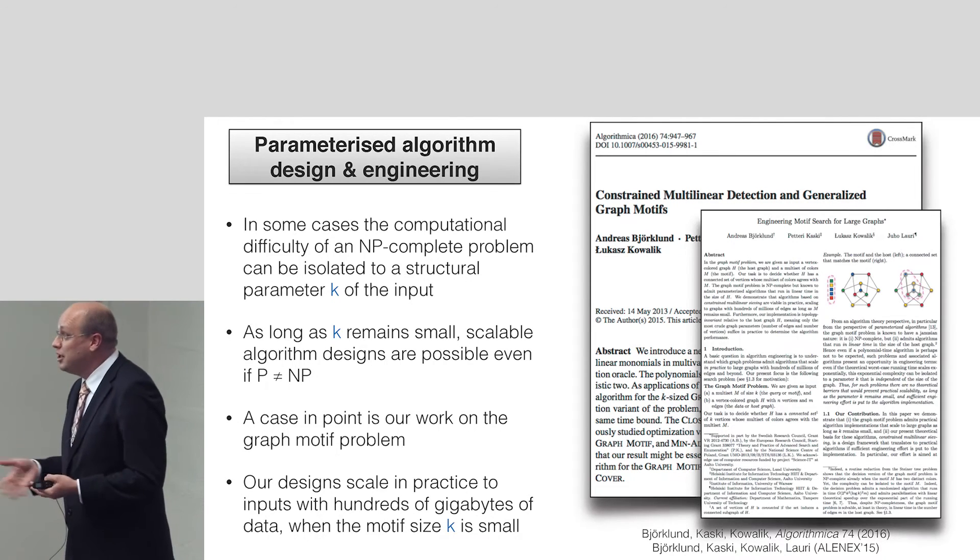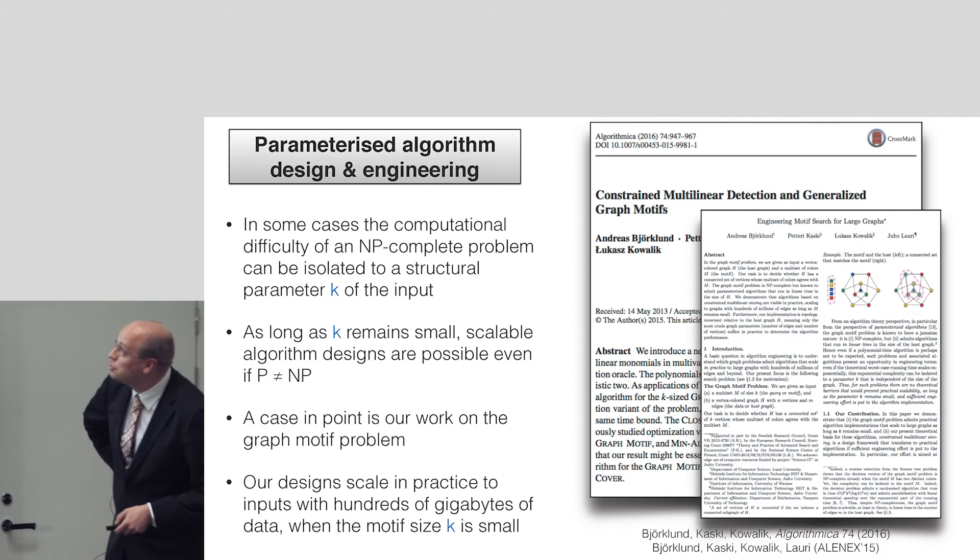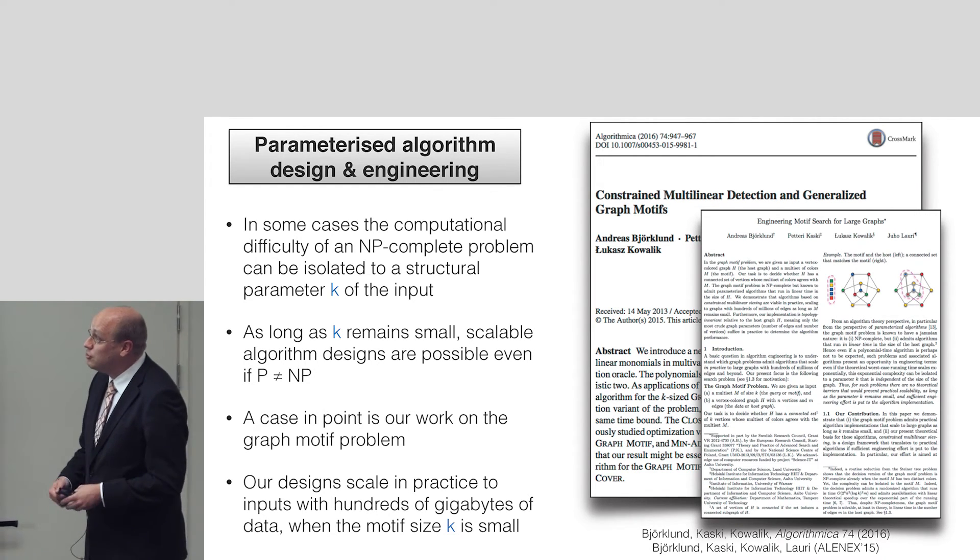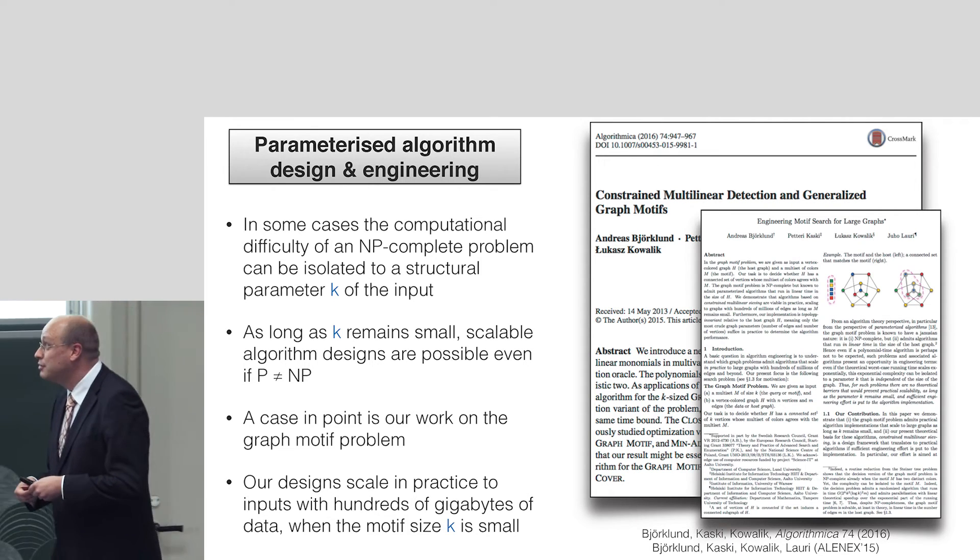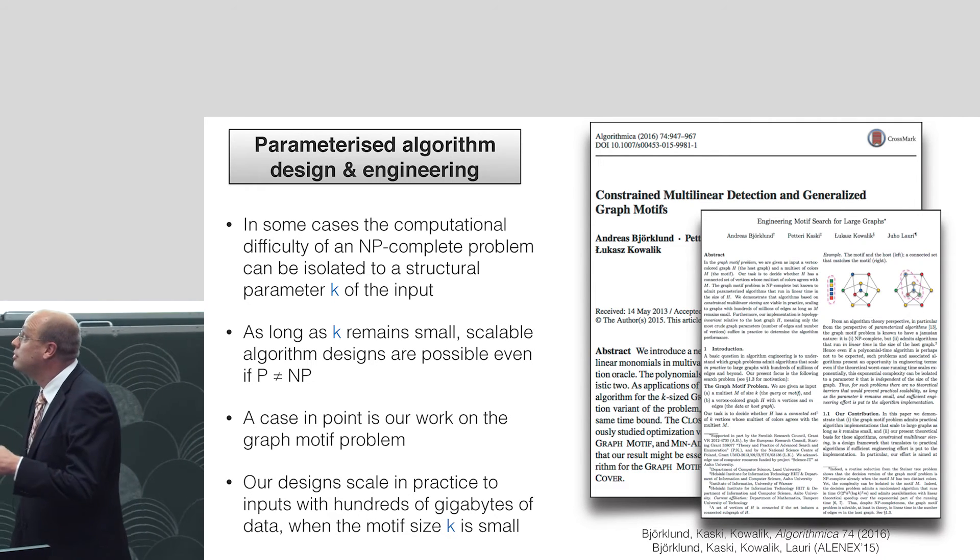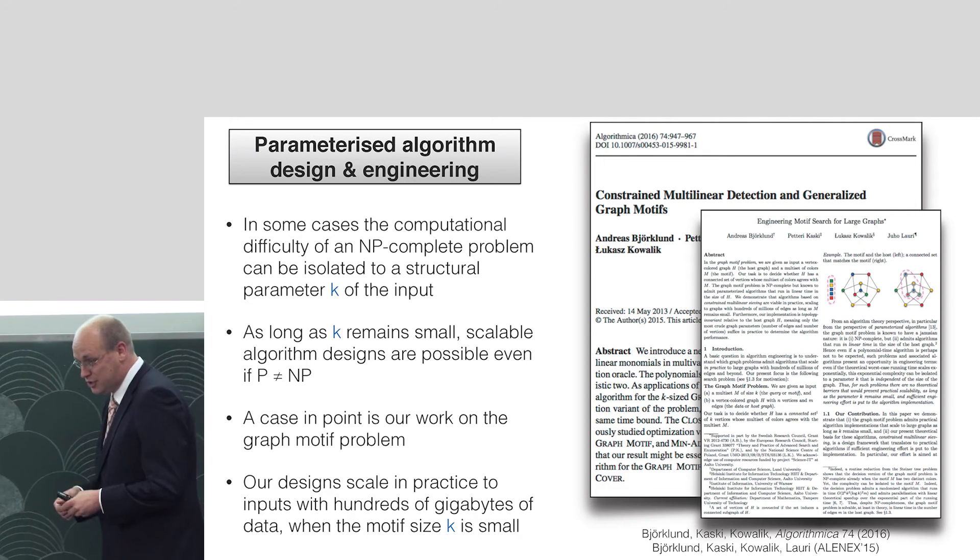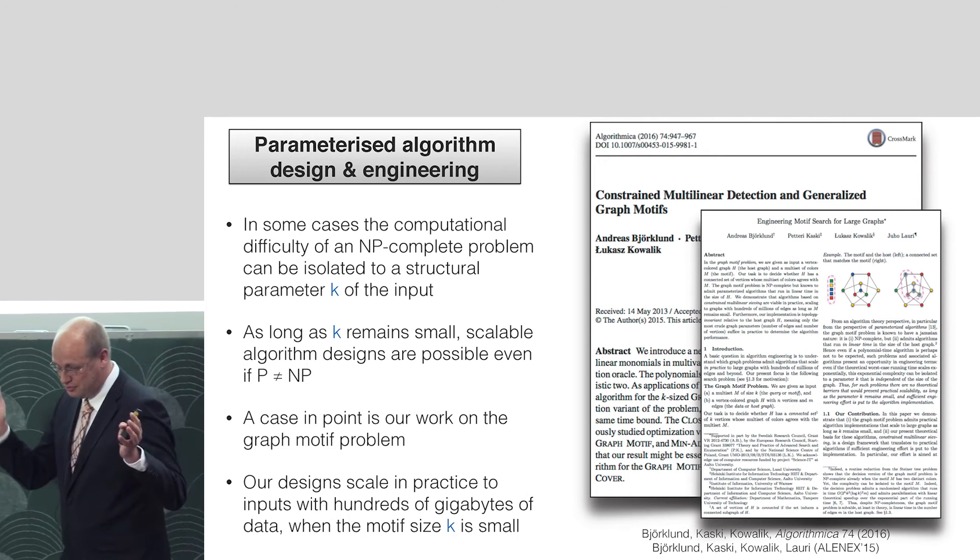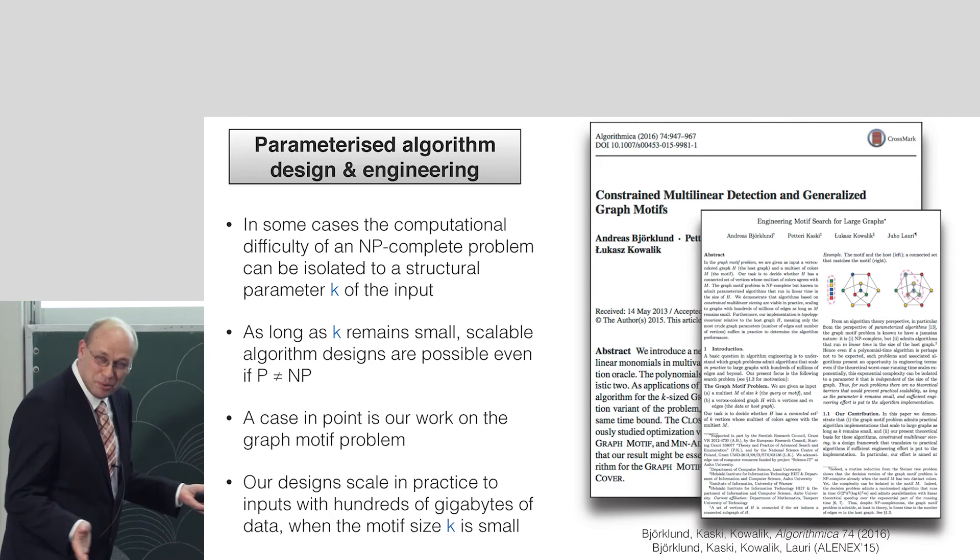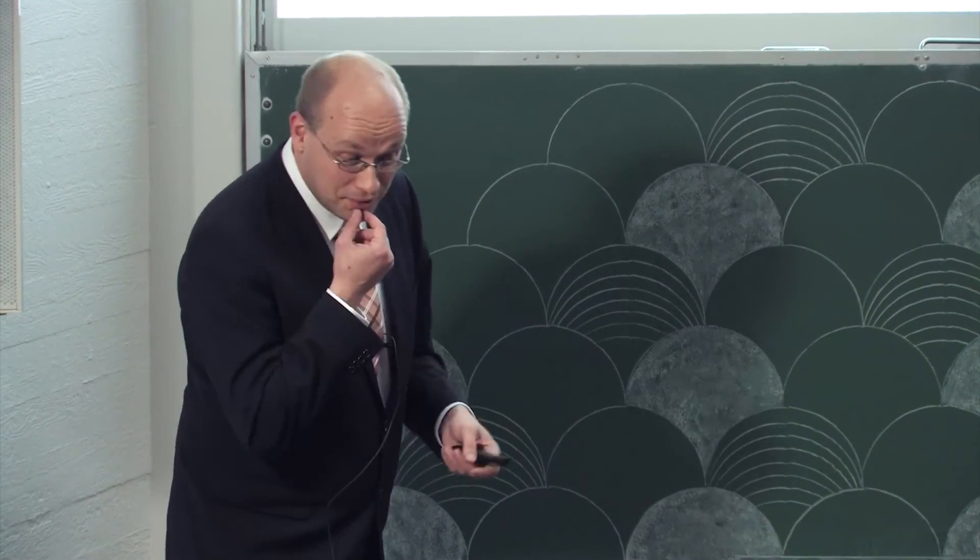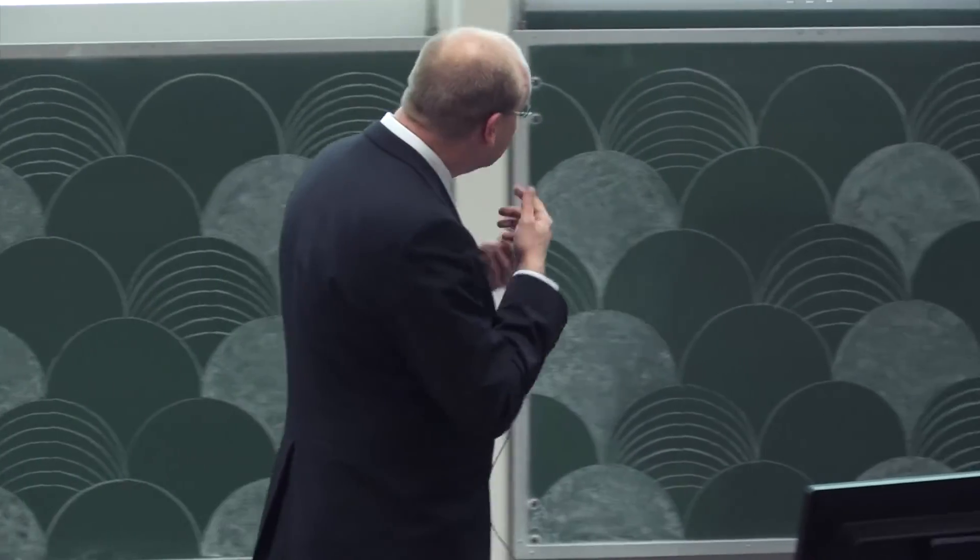Parameterized algorithms. NP-completeness in the case of some problems is not as bad as it sounds because you can introduce parameters into the input. And as long as those parameters remain small, we get extremely scalable solutions. For example, one of the examples of this is our work on the so-called graph motif problem. If the motif size, the thing that we are searching from big amounts of data remains small, we get linear scalability. Literally we can work with hundreds of gigabytes of data and beyond, even though the problem is NP-complete in its general form.